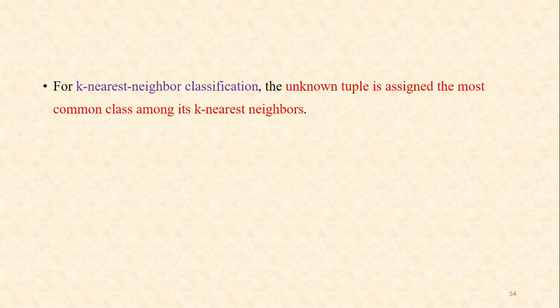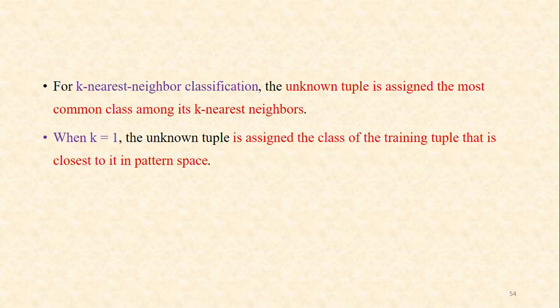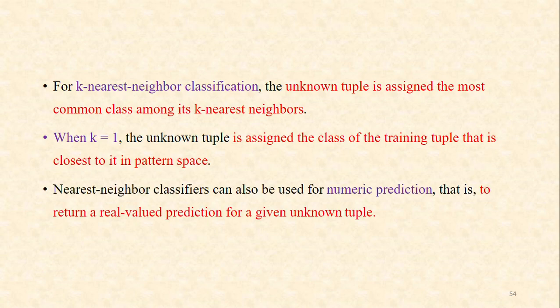For k-nearest neighbor classification, the unknown test tuple is assigned the most common class among its k-nearest neighbors. That is, we evaluate the closeness between the test tuple and the training tuples, then consider the class labels of the k-nearest training samples — whichever class appears in the largest number. When k equals 1, the unknown tuple is assigned the class of the single closest training tuple. Nearest neighbor classifiers can also be used for numeric prediction, returning a real-valued prediction for a given unknown tuple.